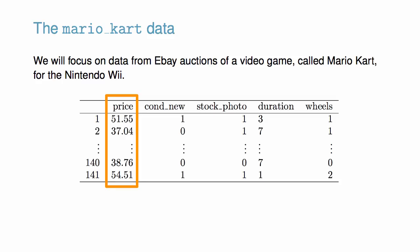Other variables pertain to whether the game is new, whether a stock photo was used, the duration of the auction, and how many game control wheels were included in the auction. We will try to determine how total price is related to each characteristic in an auction while simultaneously controlling for other variables.